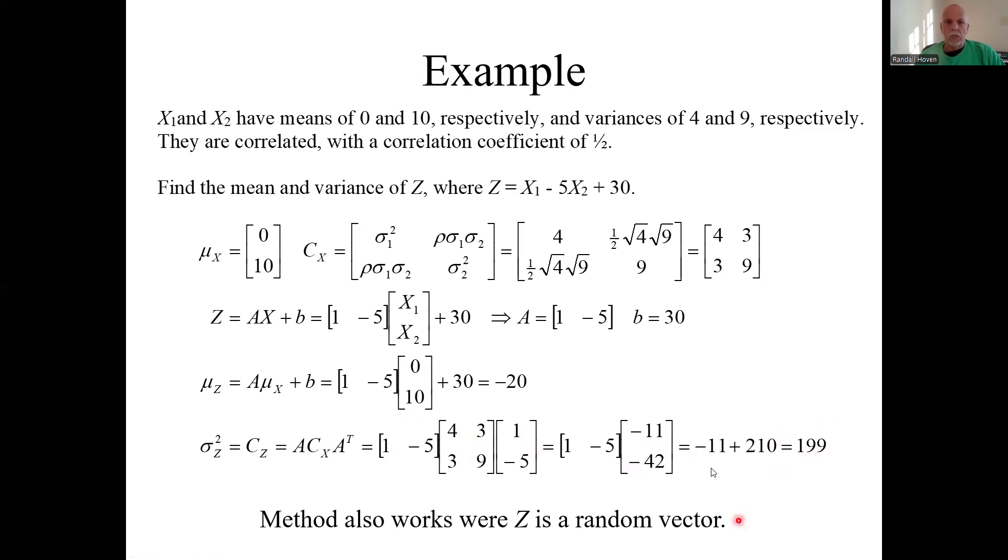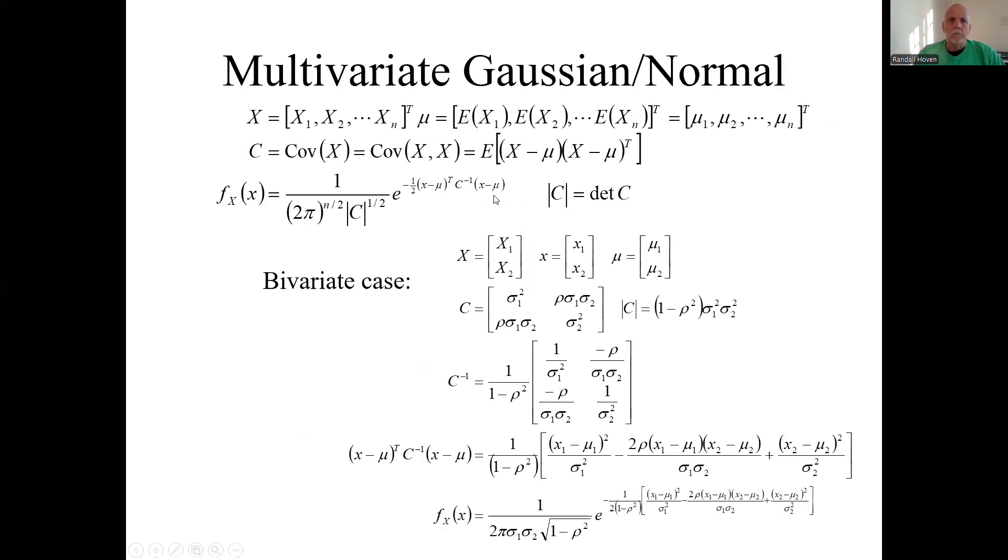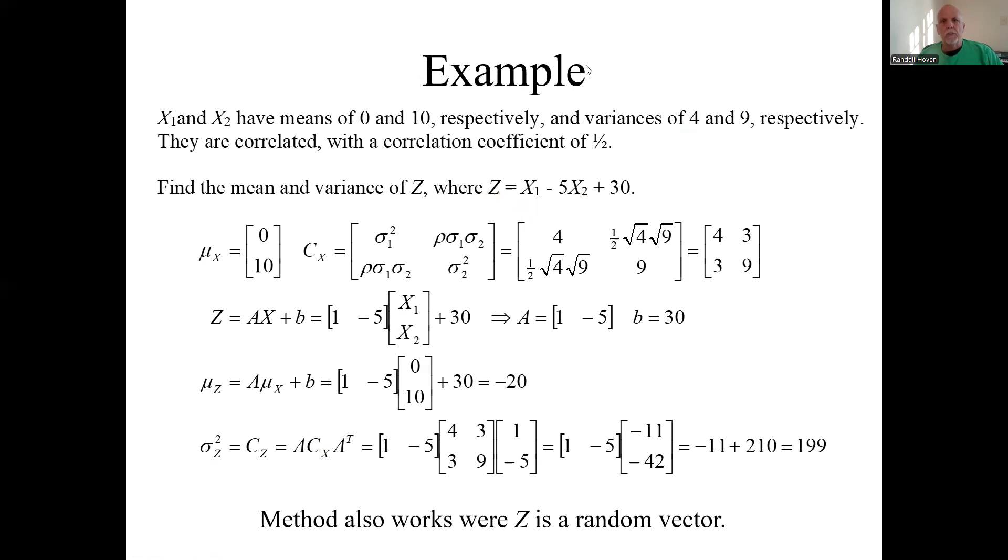This would also work if the left side were another random vector. In this case, even though Z was a scalar, a convenient way to do this was using the matrix relationships on the previous charts. But it would also work if Z is a random vector. That's enough for this.